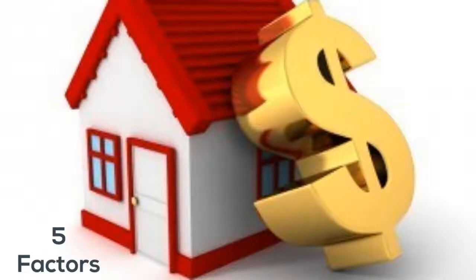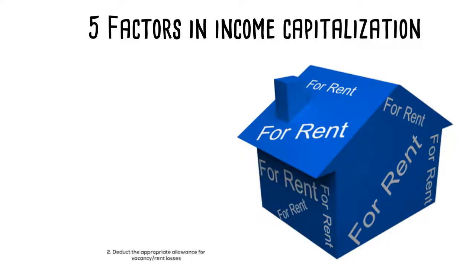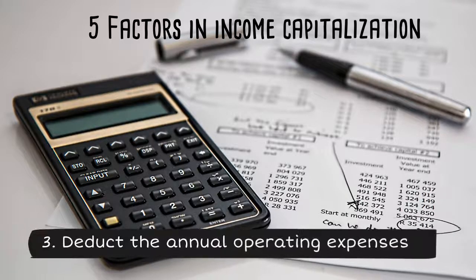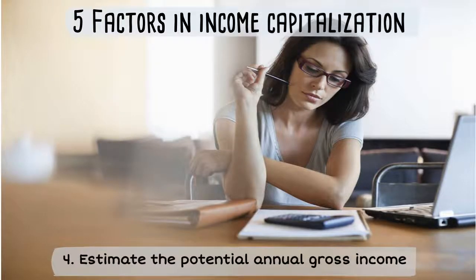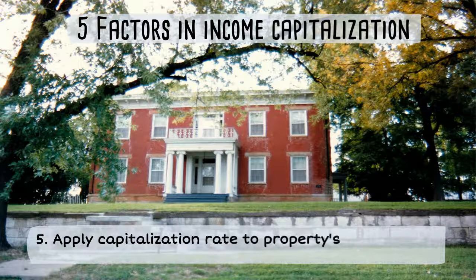Here are the five factors. First, estimate the potential annual gross income. Next, deduct the appropriate allowance for vacancy and rent losses. Now, deduct the annual operating expenses. And finally, apply the capitalization rate to the property's annual net operating income to get the estimated property value.